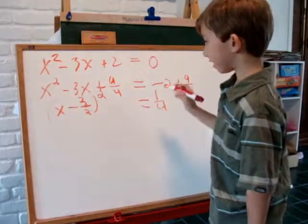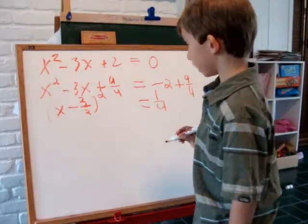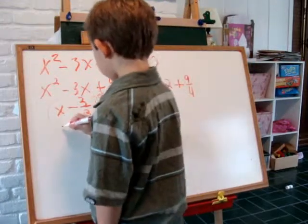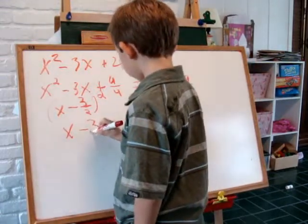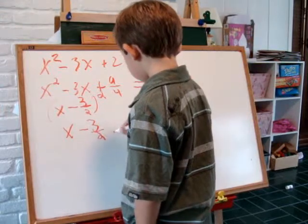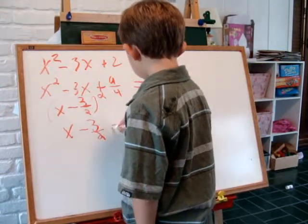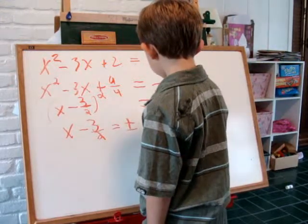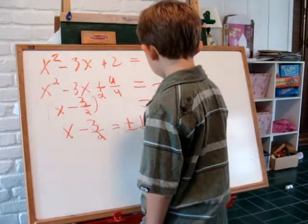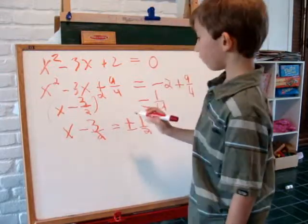Then we take the square root of both sides. We get x minus 3 halves equals plus and minus 1 half. Now we solve for x.